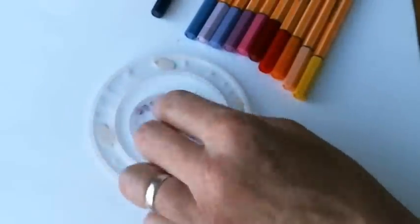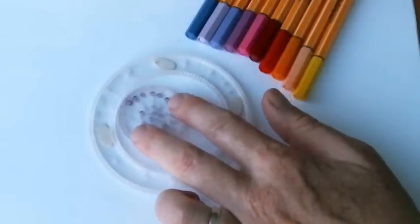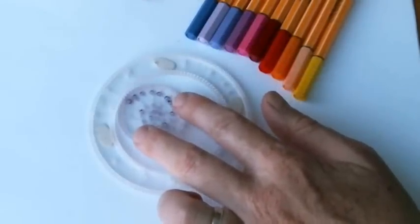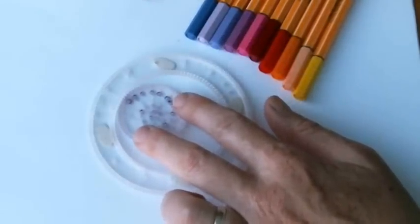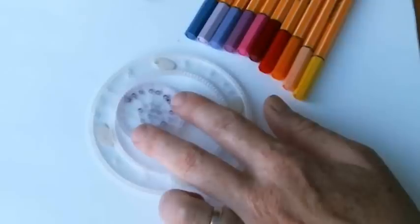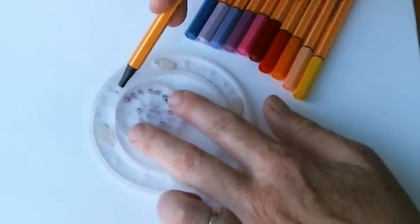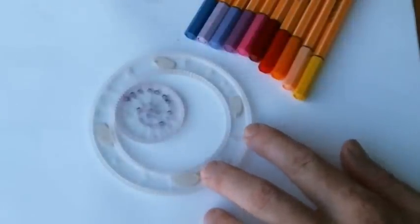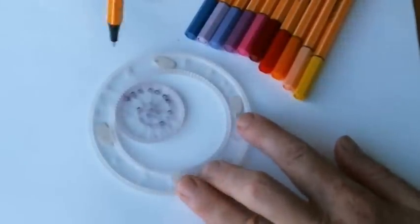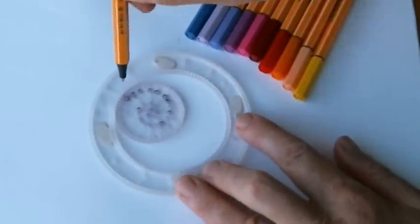Now I'm going to take wheel number 63, because it makes a five-pointed design. And I'm going to line up hole number one with a mark on the ring. It doesn't matter which mark, unless you're particular about which way your star is pointing on your particular design that you're making.